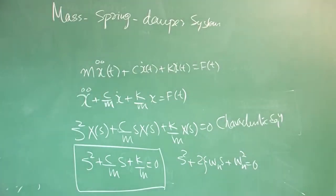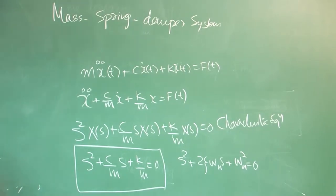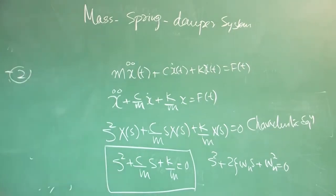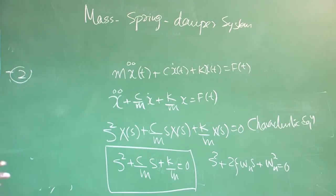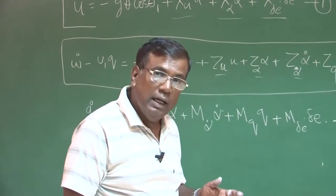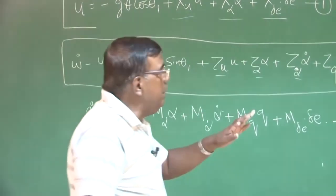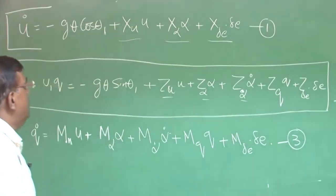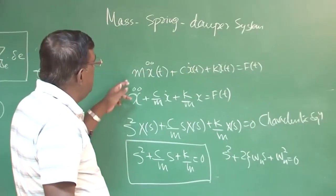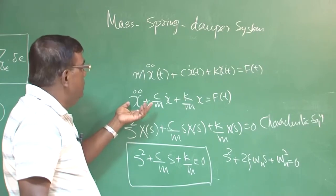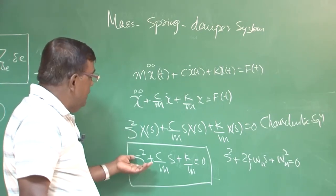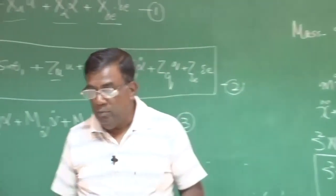We compare this with the standard form of a second-order system: s² + 2·ζ·ω_n·s + ω_n² = 0. Comparing these, we can find the numerical values of zeta (ζ) and natural frequency (ω_n). This allows you to choose the values of c, k, and m to design your system — whether it is critically damped, over-damped, or under-damped. A similar approach will be applied here using Laplace transform to find equations in the frequency domain. The advantage is that time-domain equations require integration, but in frequency domain using Laplace transform, the equations become algebraic, making computation simpler.